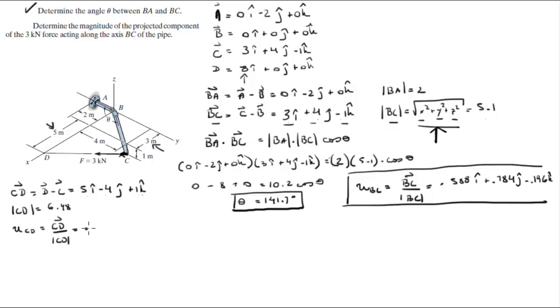And it comes out to be 0.772i minus 0.617j plus 0.154k. Multiplying this vector by the magnitude of 3 kilonewtons.